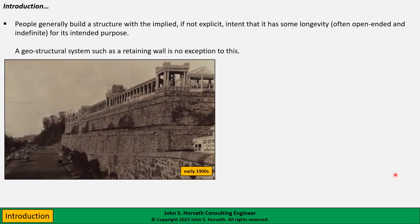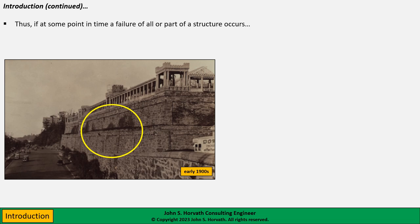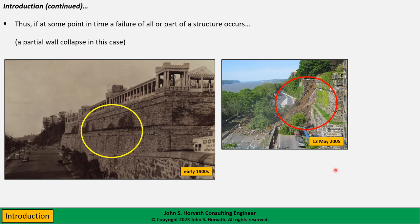A geostructural system such as a retaining wall is no exception to this. This is a rather massive gravity retaining wall constructed in the early years of the 20th century on the Upper West Side of the Borough of Manhattan in New York City. Believe it or not, this was built by a homeowner for a private residence — this rather imposing castle-like structure. So if at some point a failure of all or part of a structure like this occurs — in this case a partial wall collapse that happened in the early years of the 21st century — it is logical to ask the questions: why and why now?